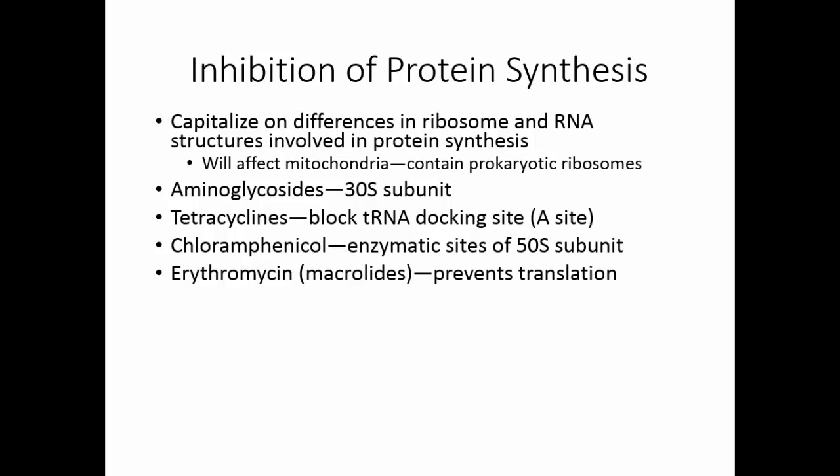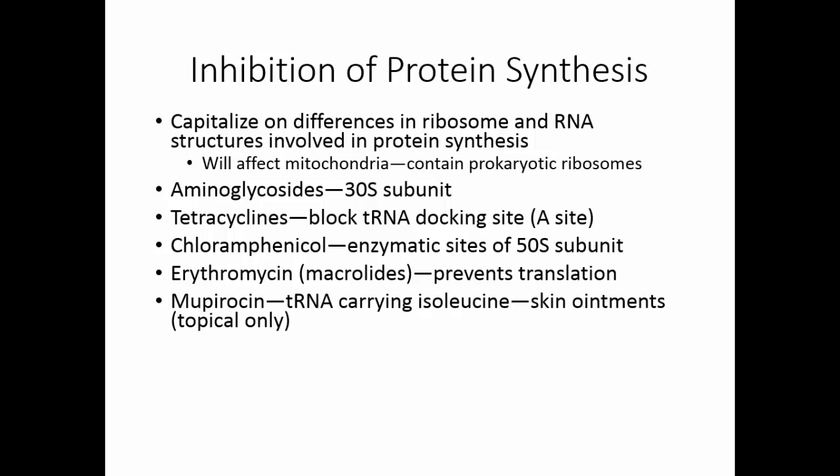Erythromycin and other macrolides prevent the translation of the messenger RNA. Mupirocin targets the transfer RNA carrying isoleucine — it's very specific for what it targets. Since that transfer RNA is the same in our cells as in the prokaryotic cells, this is highly toxic to us, so we use this only in skin ointments — it's only used topically.